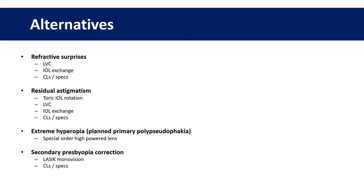In cases of extreme hyperopia it's usually possible to special order a higher powered lens, and this would often be preferable in eyes likely to have more crowded anterior segments rather than putting two lenses in the eye. And for secondary presbyopia correction, laser monovision, contact lenses, or glasses are the alternatives to consider.